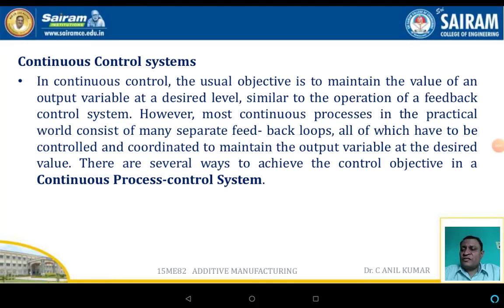Hello everyone. In this session we will discuss about the continuous control system. The continuous control system's main objective is to maintain the values of the output variable at a desired level. In the continuous control system, the control system that is adopted is a feedback control system.